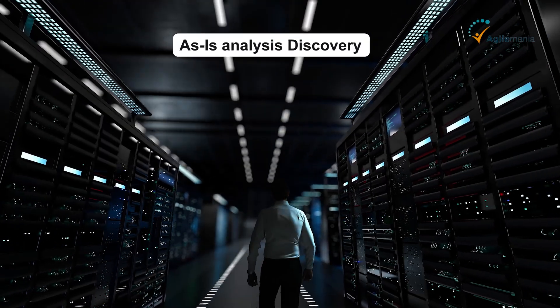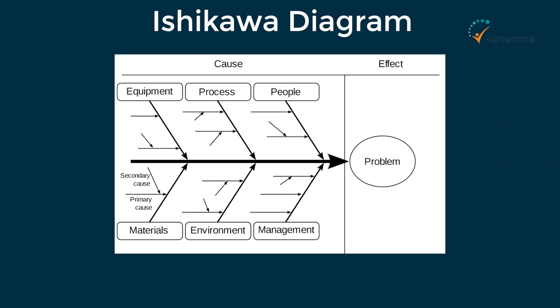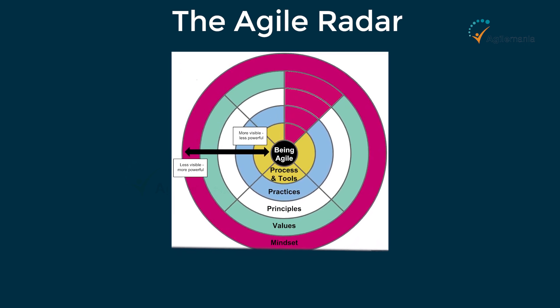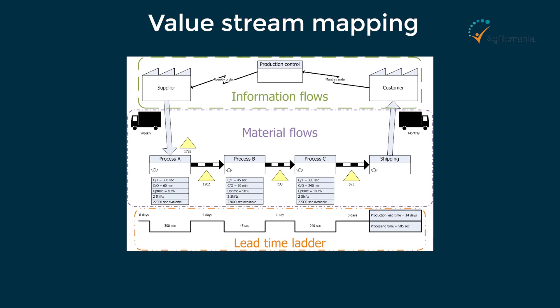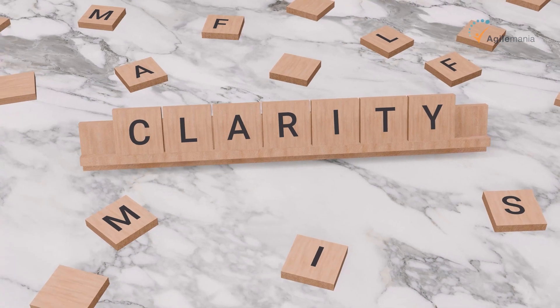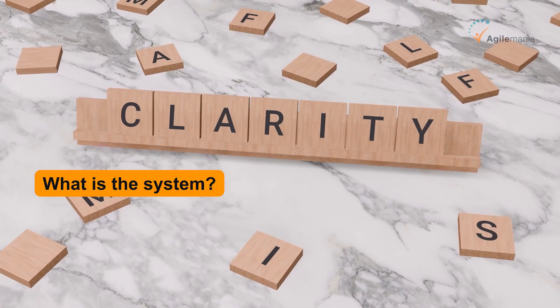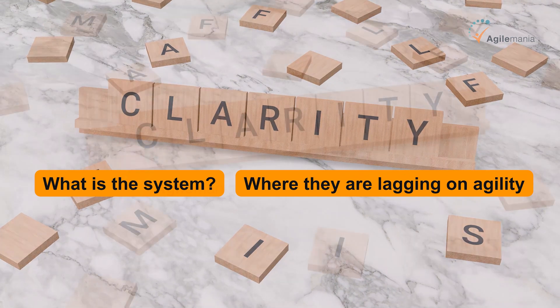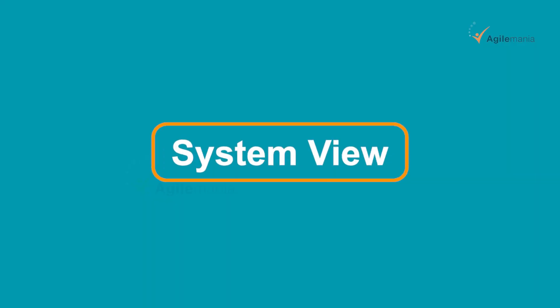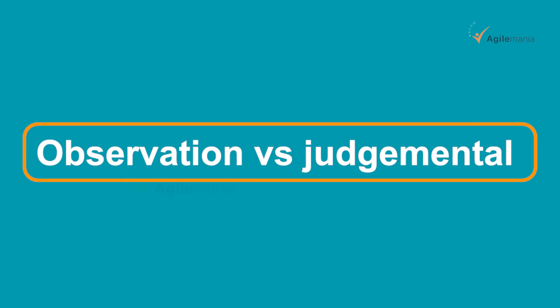After the as-is analysis, we do root cause analysis. We can use the Ishikawa diagram, the Agile Principles Radar chart, and value stream mapping. With these tools you will have very good clarity on what the system looks like and where they are lagging in agility. The system view, and distinguishing observation versus judgment, are all very useful here.